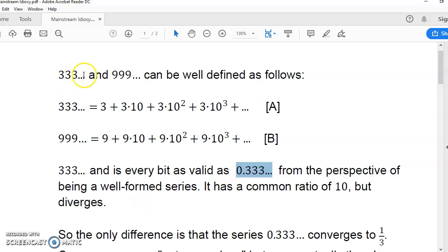This particular series here, and this one here, don't converge. But they do have a common ratio also, just like 0.333... has a common ratio. These series here also have common ratio, except that they don't converge.